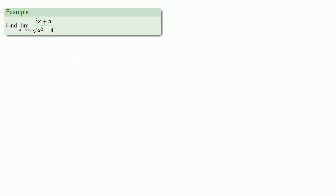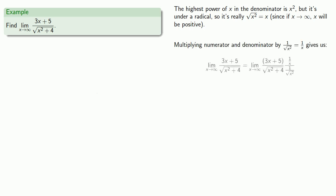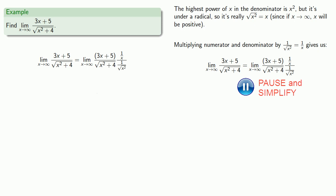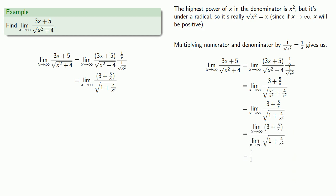What about a more complex expression? The highest power of x in the denominator appears to be x squared, but because it's under a radical, it's really the square root of x squared, which reduces to x, since x is positive as x goes to infinity. So we'll multiply numerator and denominator by 1 over the square root of x squared, otherwise known as 1 over x, then do some algebra to simplify the expression and apply our limit theorems to find our limit, which will be 3 over 1, or 3.